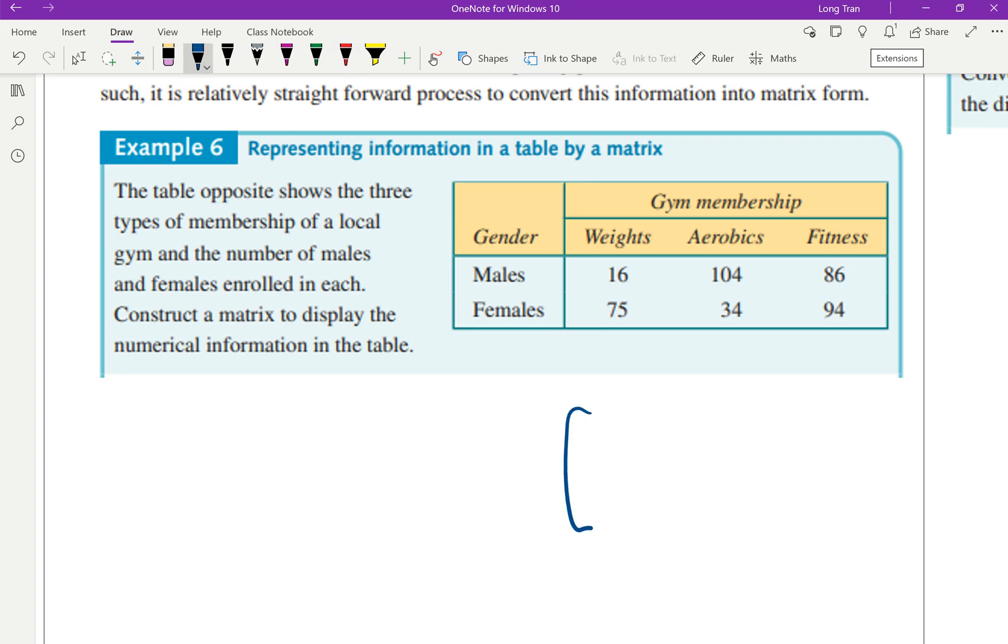You would have done this as an intro from last year - you can do a matrix where there's two rows, male and female, and then you have three columns. So here we have weight, aerobics, and fitness. When you put it into this matrix it would be 16, 104, 86, 75, 34, and 94. That would be representing this data.